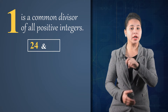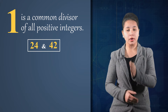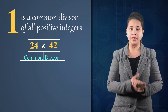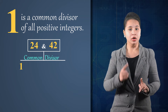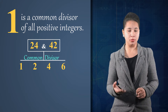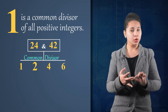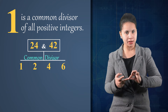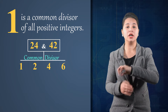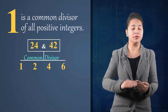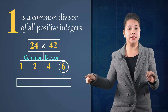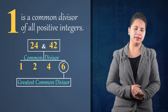For example, take 24 and 42. If we take 24 and 42, then their common divisors are: 1, 2, 4, and 6. This means 1 divides into 24 and 42, 2 divides into both, 4 also divides into both, and 6 also divides into both. So these numbers are common divisors of 24 and 42. But among them, 6 is the greatest common divisor.